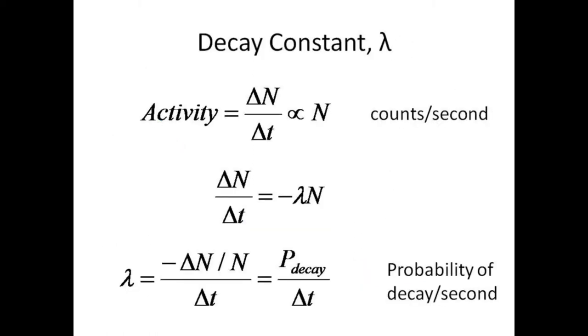The activity is what we will actually measure using a Geiger counter. Activity is defined as the rate of decay, delta N over delta t, in counts per second. The rate of decay is proportional to the number of radioactive nuclei present in the sample, with the constant of proportionality being the decay constant, lambda.